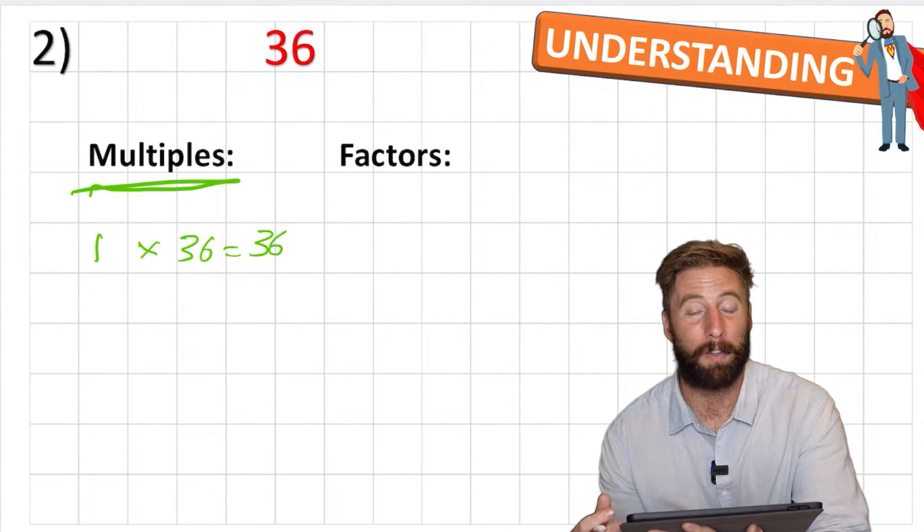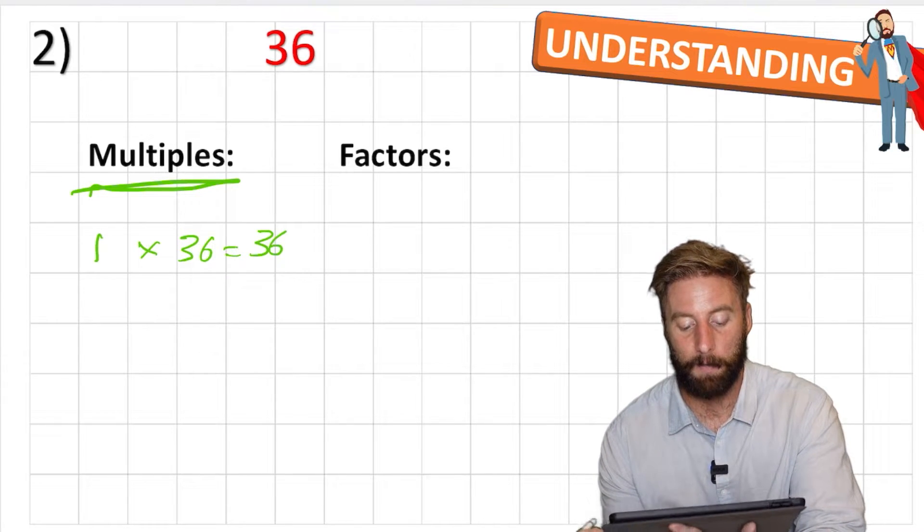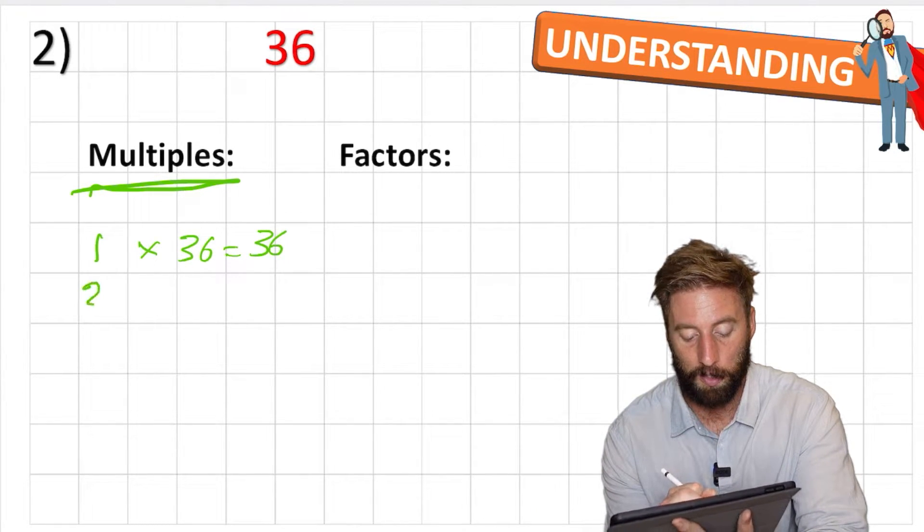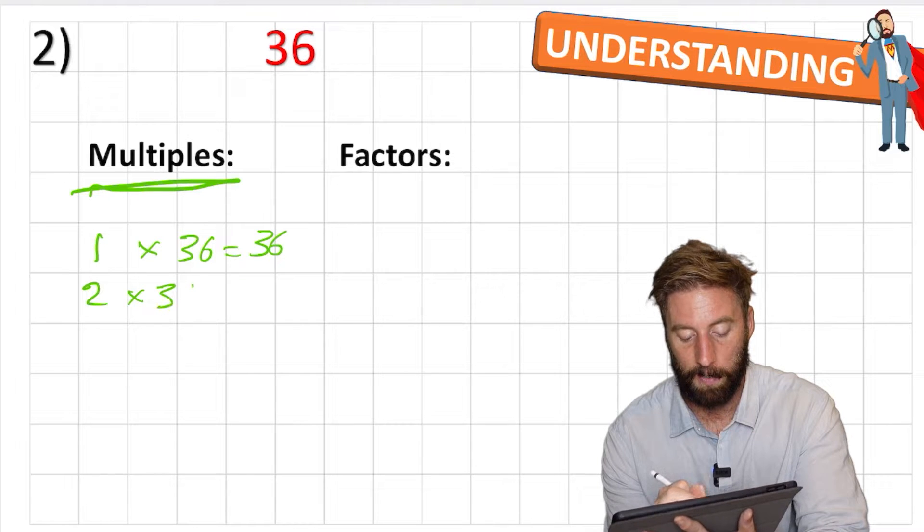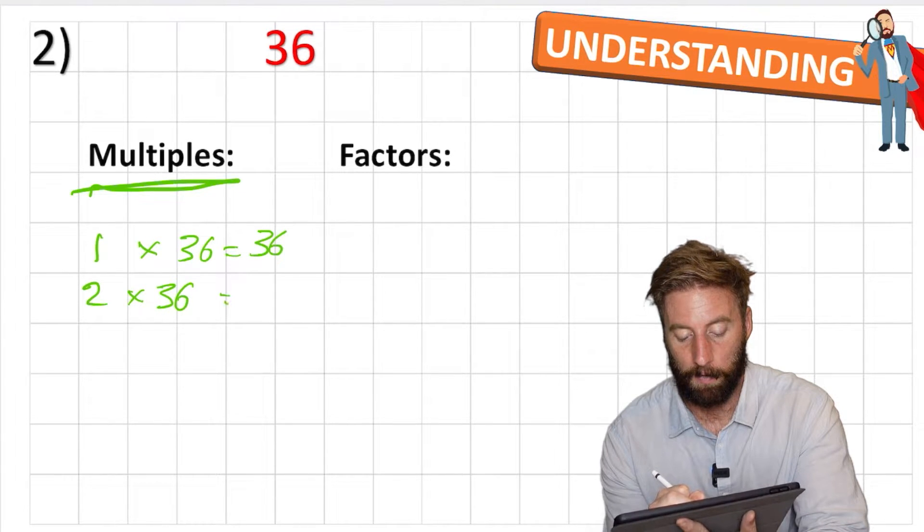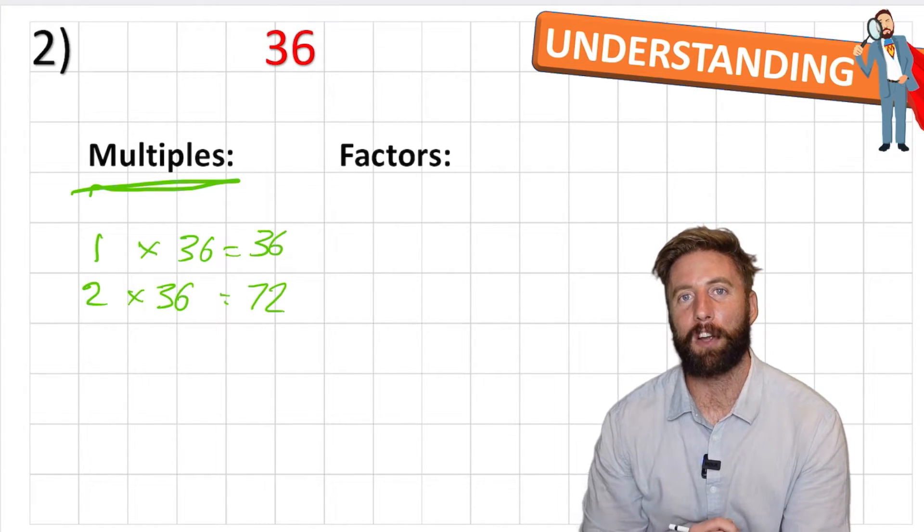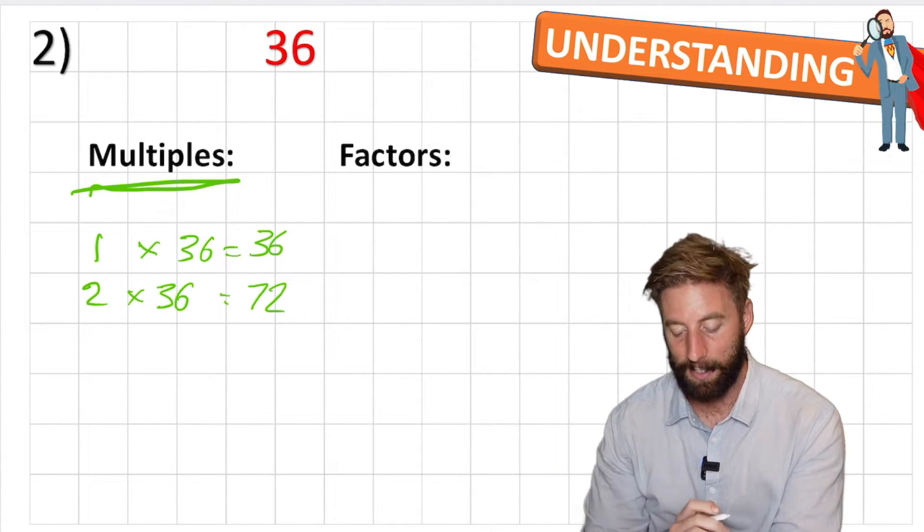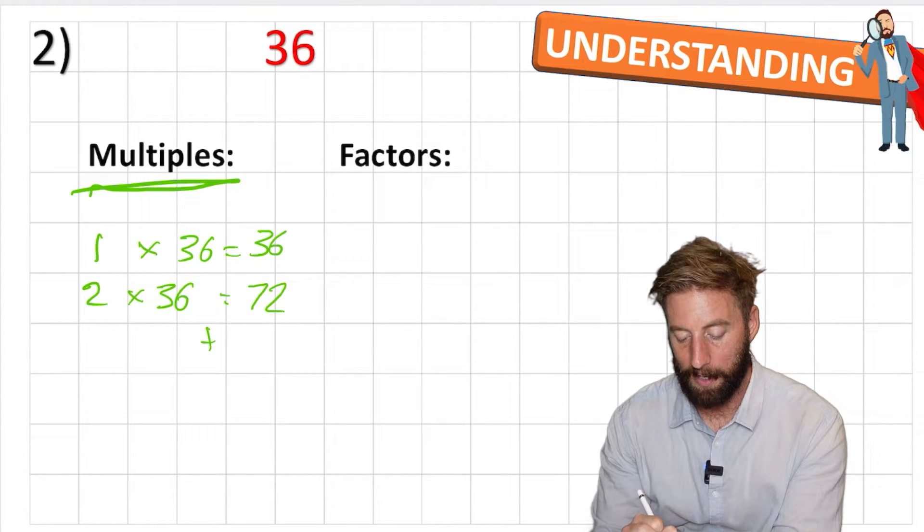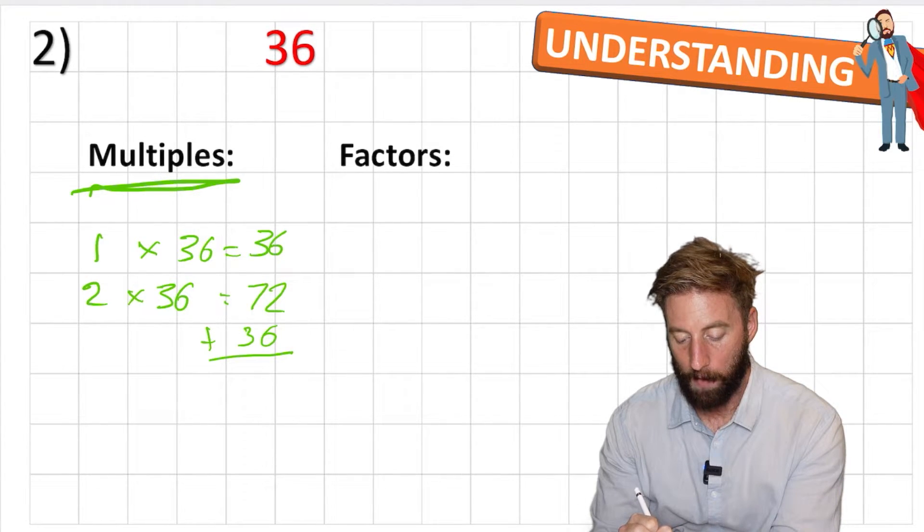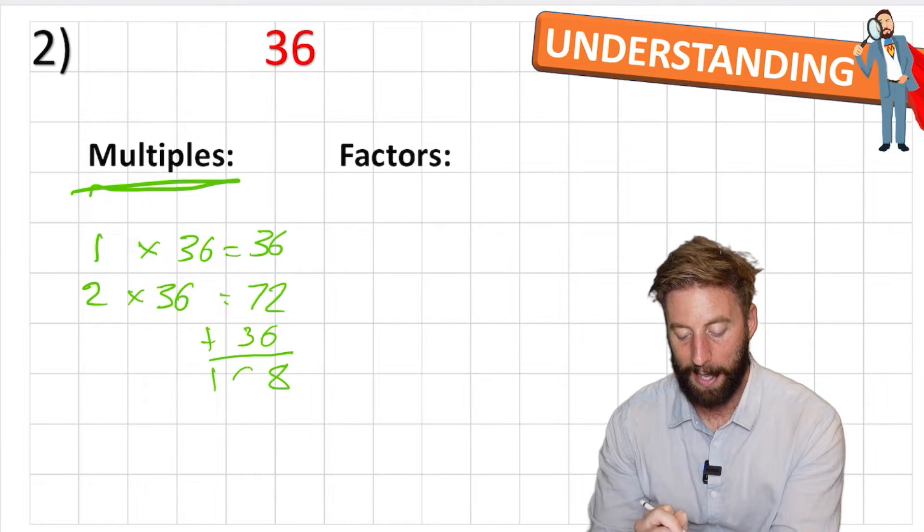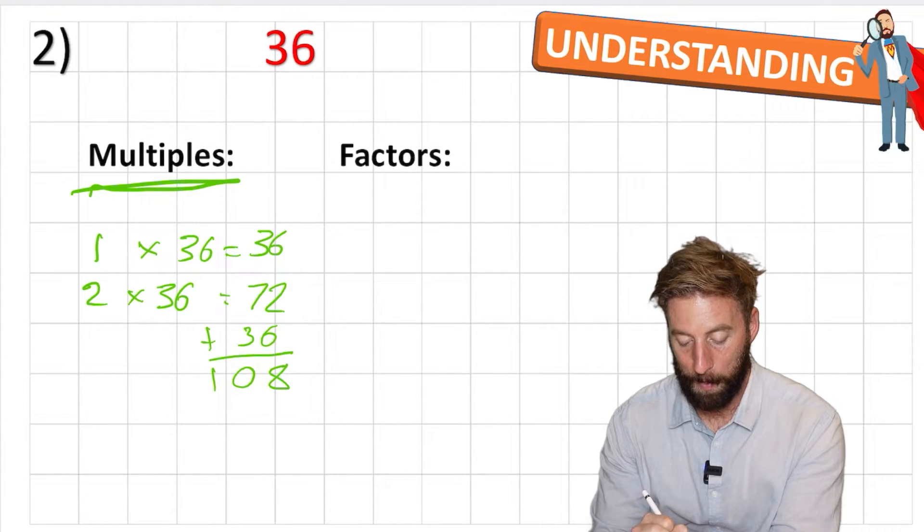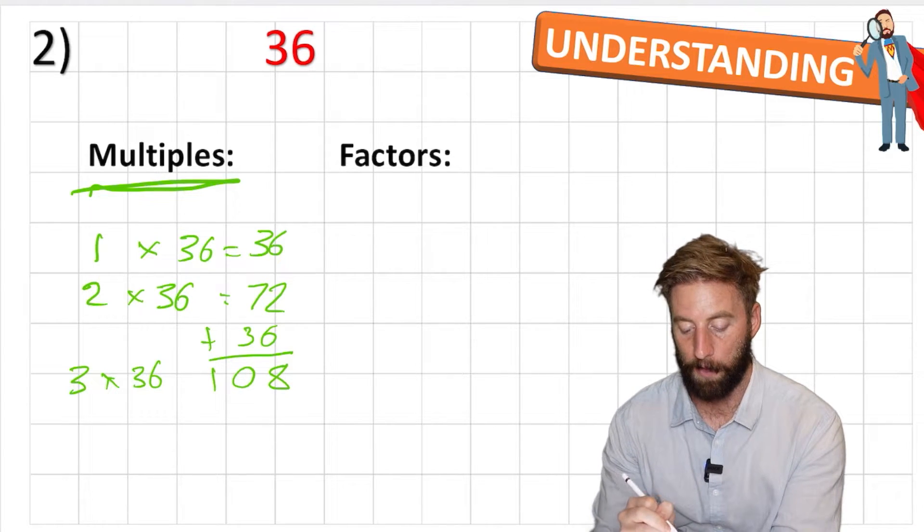So multiples are just the times table, the 36 times table. So now I can look at 2 times 36, and that's going to equal 72. But that's about as far as my mental maths wants to go. So now I can just keep adding 36 to my answer. So if I add 36 to 72, I'm going to get 108.